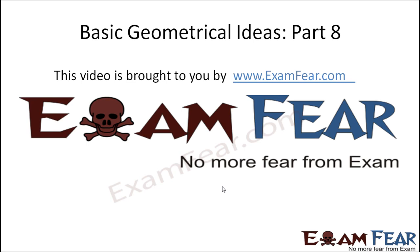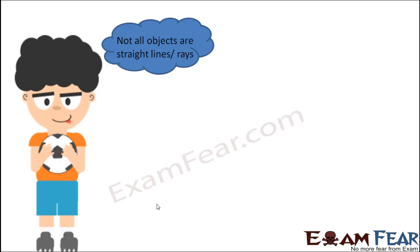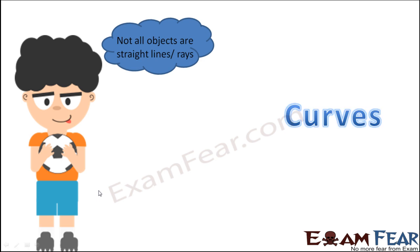Hello friends, this video on basic geometrical ideas part 8 is brought to you by examfear.com. Now you might be wondering that not all the objects that we see around us are straight lines. Because till now we have been discussing only about lines, line segments, rays, and all of them are like straight lines. So we also see a lot of curved objects around us. So now in this section we are going to talk about curves.